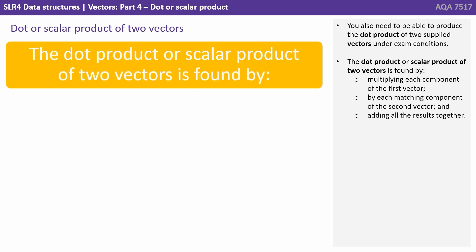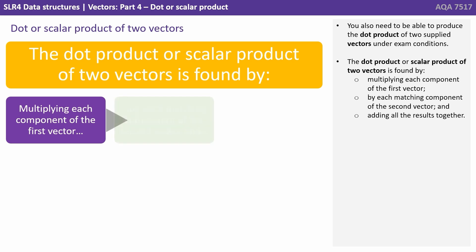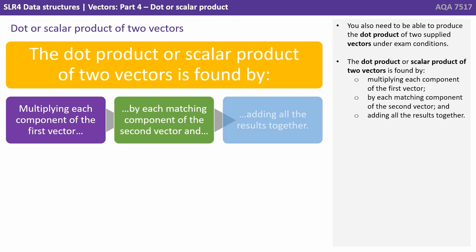The dot product or scalar product of two vectors is found by multiplying each component of the first vector by each matching component of the second vector and adding all the results together.